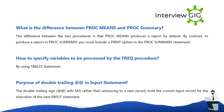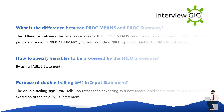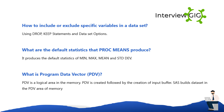What is the purpose of double trailing at sign in an input statement? The double trailing sign tells SAS, rather than advancing to a new record, to hold the current input record for the execution of the next input statement. How to include or exclude specific variables in a data set? Using DROP and KEEP statements and data set options.